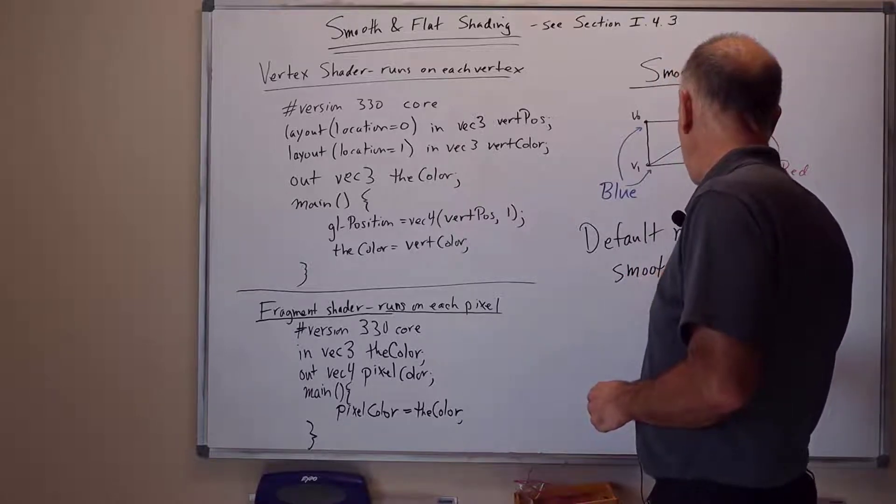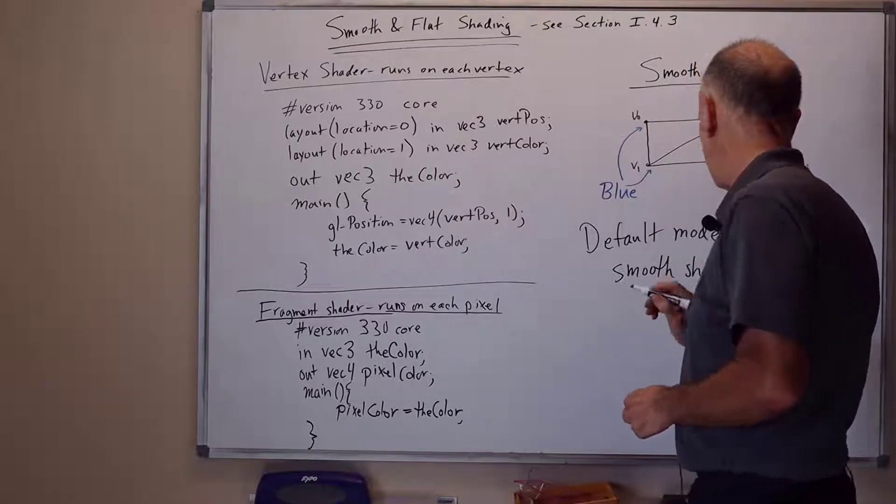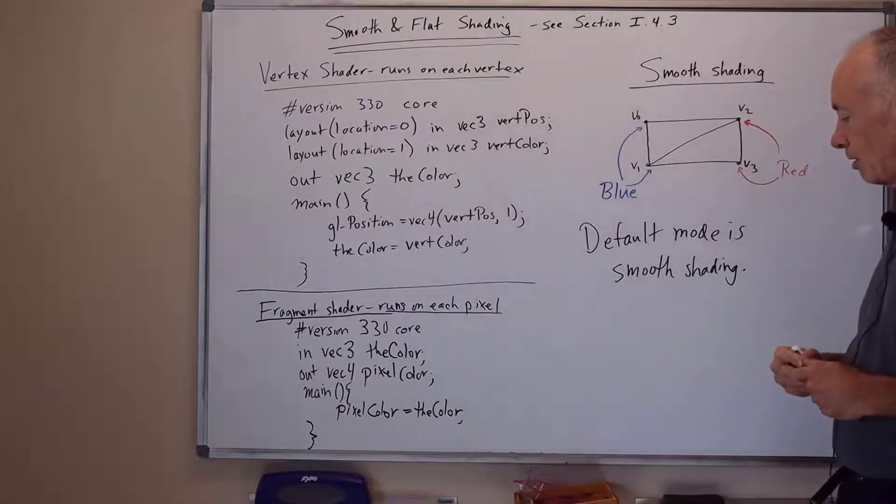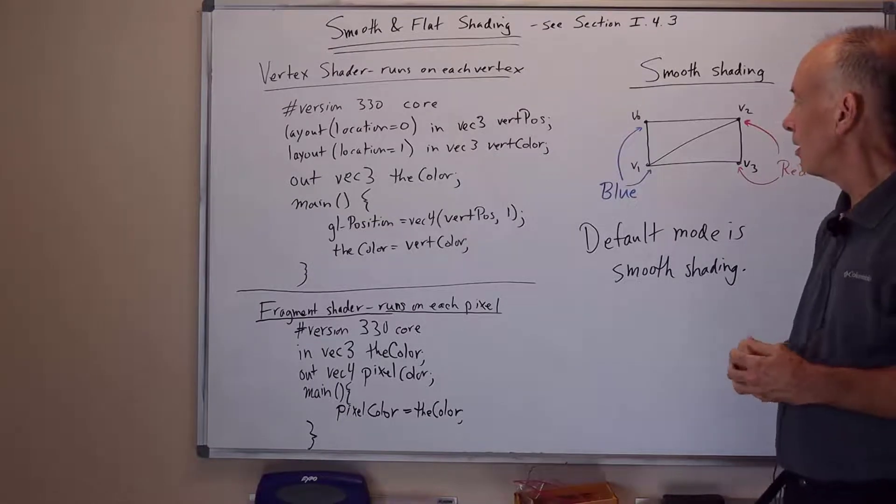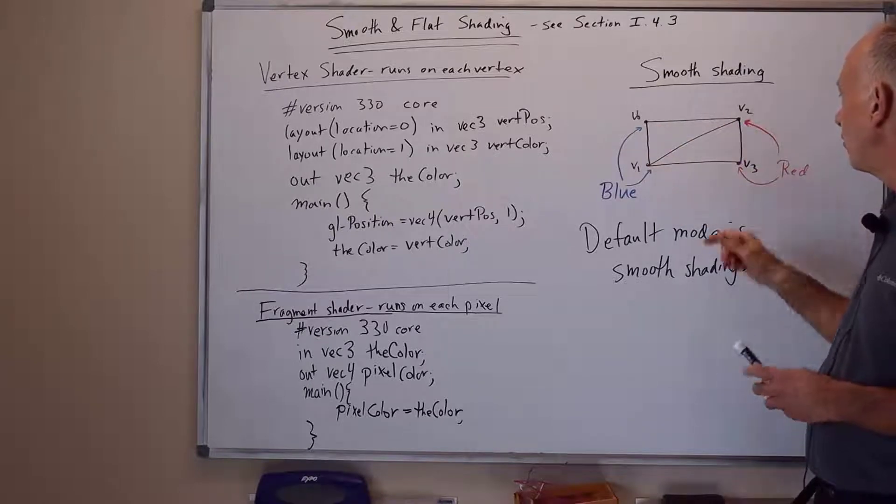What this means is we average colors across the triangles from the vertices. This is the way we discussed in the previous presentation as well. Here I've drawn two triangles with vertices V0, V1, V2, and V3.